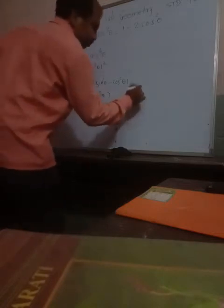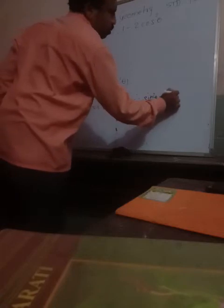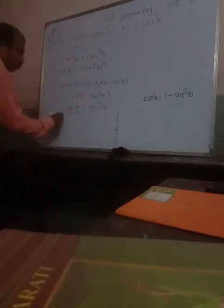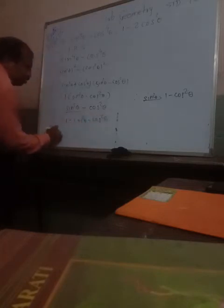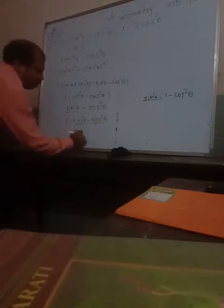Now instead of sin squared theta, what do we write? See here: sin squared theta is equal to 1 minus cos squared theta. So substituting, we get 1 minus cos squared theta minus cos squared theta, which gives 1 minus 2 cos squared theta. And that is our proof, completely and properly done.